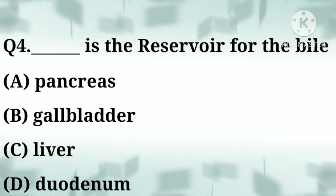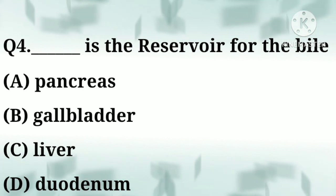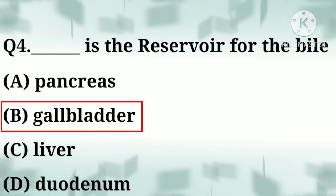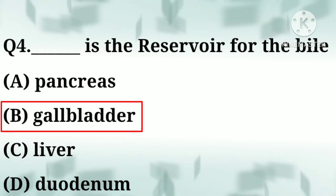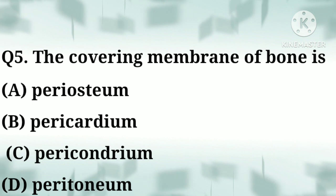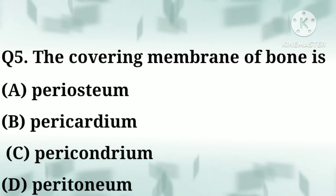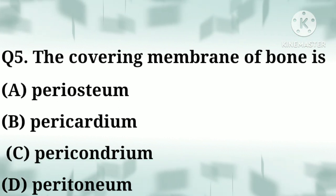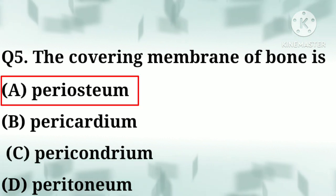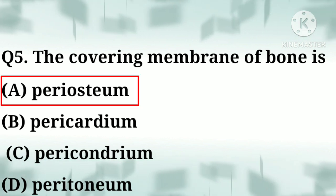Option B: gallbladder, option C: liver, option D: duodenum. Correct answer: option B, gallbladder. Question number five: the covering membrane of bone is — option A: periosteum, option B: pericardium, option C: perichondrium, option D: peritoneum. Correct answer: option A, periosteum.